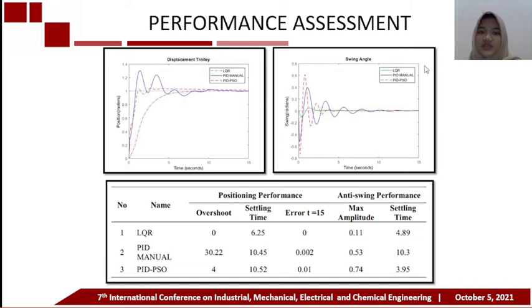In performance assessment from three control methods: LQR, PID-Manual, and PID-PSO shows in the graphics. Graphic on the left for displacement trolley and graphic on the right for swing angle. For LQR, we selected Q as diagonal 10 and R is 0.1. Meanwhile, in the PID-Manual, we selected 20 for the controller gain. And for PID-PSO, the gain controller got from optimization. And the comparison of numerical data in the table shows that the system with the PID-Manual control system has a large overshoot value compared to the system using LQR and PID-PSO.